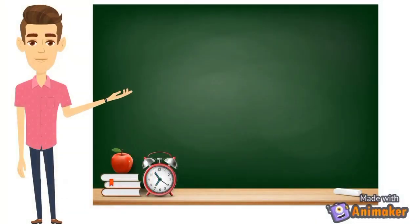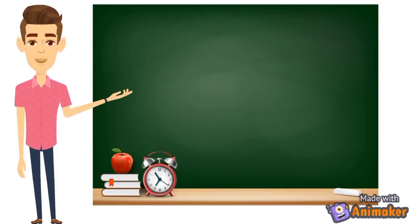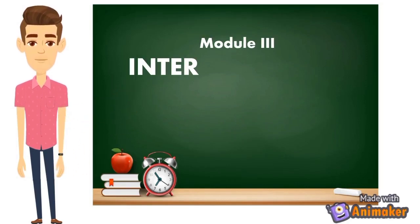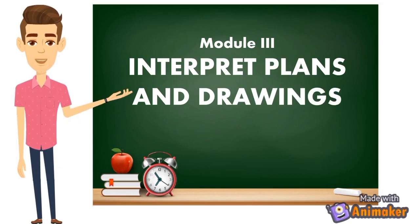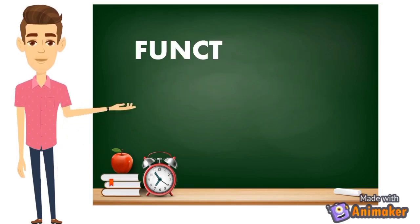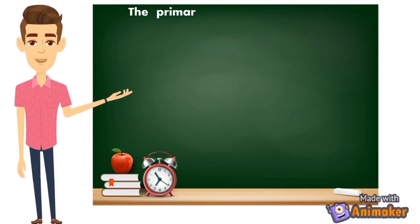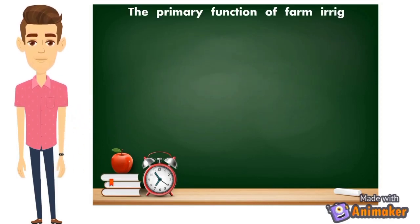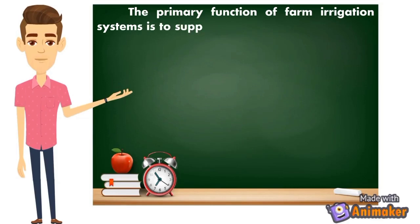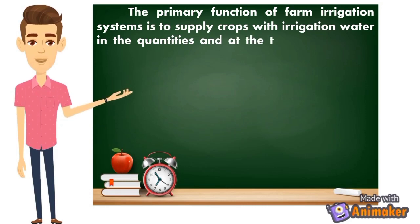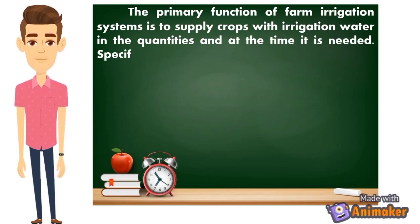Welcome to another episode of AgriGuru lessons. For today's episode, I'm going to discuss Module Number 3: Interpret Plans and Drawings. The primary function of farm irrigation systems is to supply crops with irrigation water in the quantities and at the time it is needed.